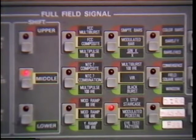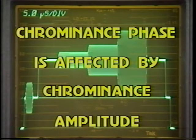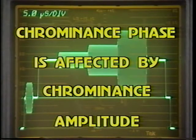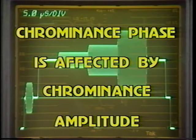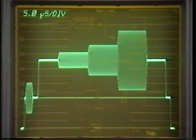Let's first consider chrominance nonlinear phase. This distortion is present if chrominance phase is affected by chrominance amplitude. Each chrominance packet in the modulated pedestal signal has the same phase as the others in the original test signal. If the system under test delays the three packets differently because of their different amplitudes, and therefore changes the relative phase of the packets, there is chrominance nonlinear phase distortion present. The phase difference is expressed in degrees of subcarrier phase.